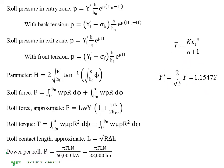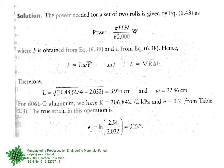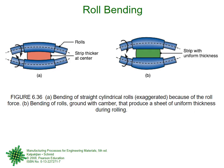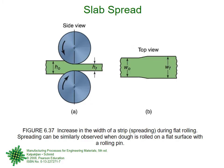Y-bar and Y-bar-prime were reviewed — Y-bar is one expression and Y-bar-prime is another. We solved for power: force is this value, length of contact is this value, strain is used to find Y-bar, and then Y-bar-dash is substituted to get power. Just a reminder that in this book, force is sometimes given in kilograms — just multiply by 9.81 to get Newtons. One good example done with an open mind is sufficient. We also covered roll bending and slab spread.